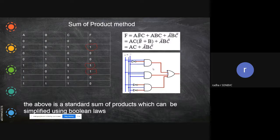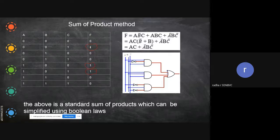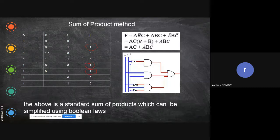In the last class we saw some examples of Sum of Products. What you have to do is write the variables, the combinations, and the expected output from the truth table. You check for ones in the output, then write the combination for the respective output marked as one. Those combinations are written as a min term, which is nothing but an AND gate — that is, multiplication.